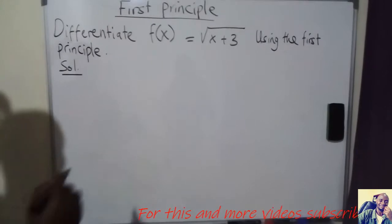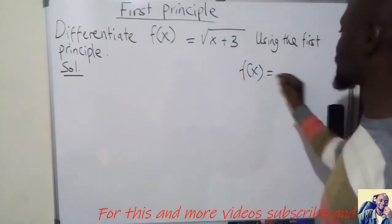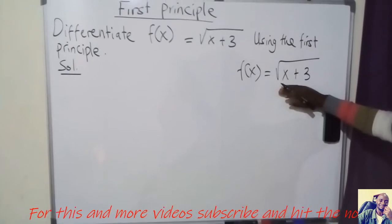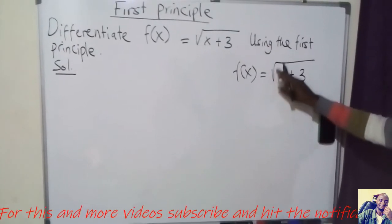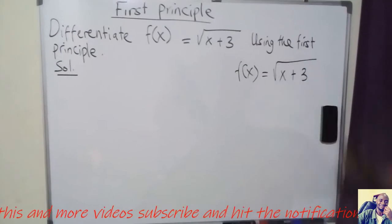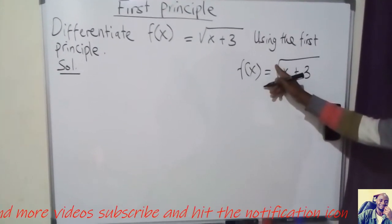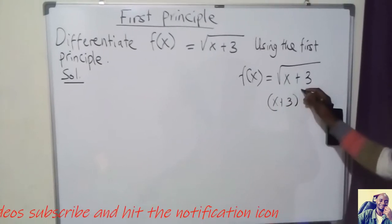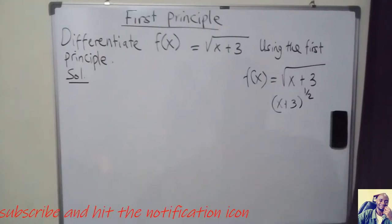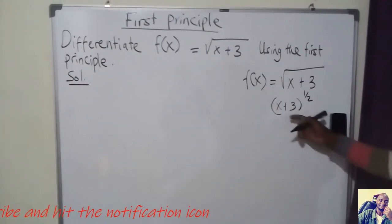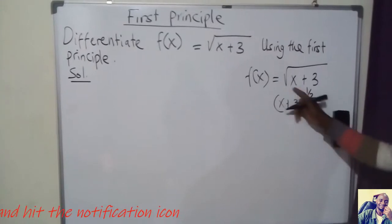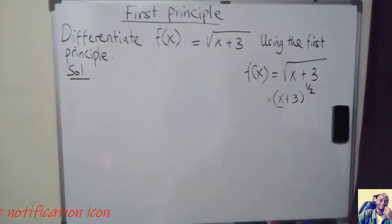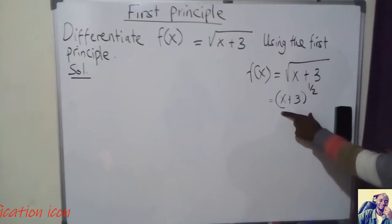Given f(x) = √(x + 3), I can differentiate this using the general form. Since we have the square root, I can change it into index form. The square root means the power is 1/2, so this becomes (x + 3)^(1/2). I will differentiate this whole function, then differentiate the function inside — this is the process we call the chain rule.